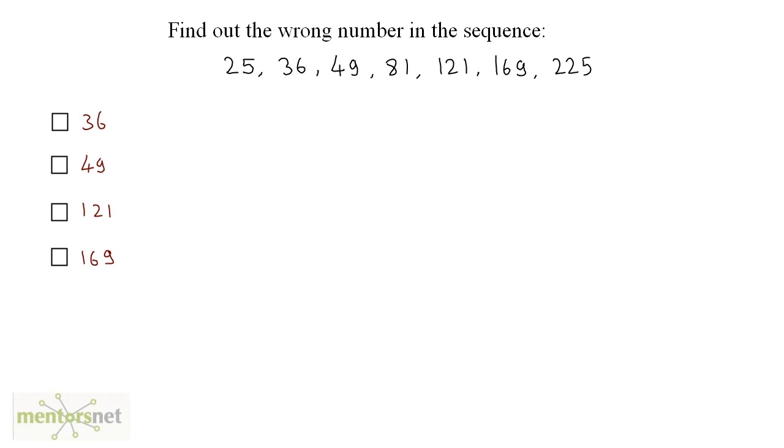Find out the wrong number in this sequence of numbers. Well, all of these numbers given are perfect squares. 25 is 5 square, 36 is 6 square, 49 is 7 square, 81 is 9 square, 121 is 11 square, 169 is the square of 13 and 225 is 15 square.